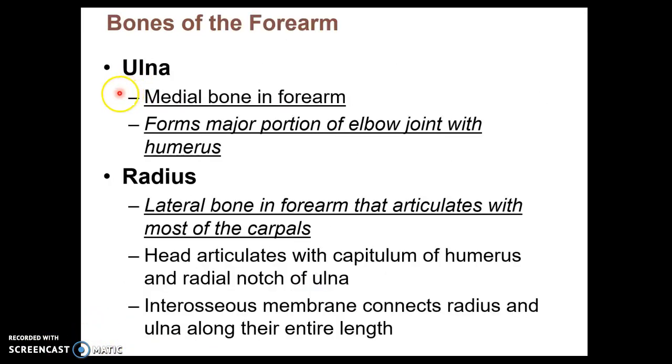The two bones in the forearm include the ulna and the radius. The ulna is the medial bone in the forearm, and its major portion is at the proximal end, where the elbow joint is located. The radius is the lateral bone of the forearm, and it articulates with most of the carpals.